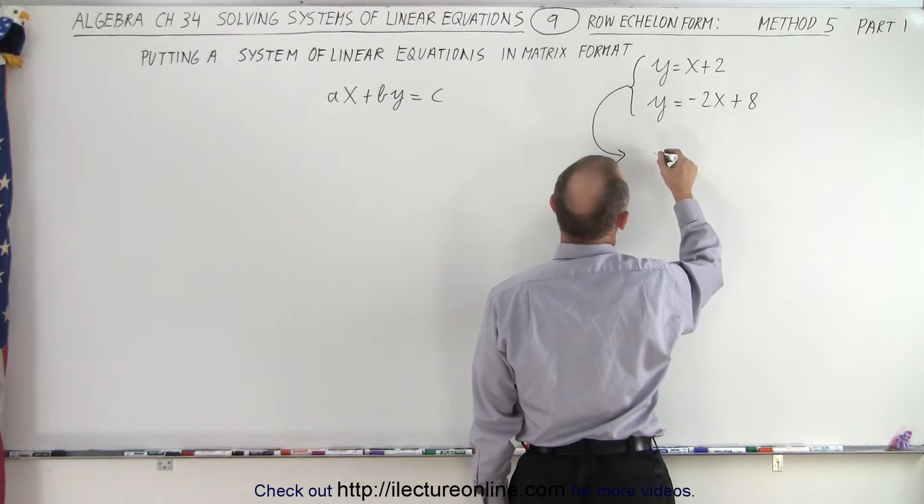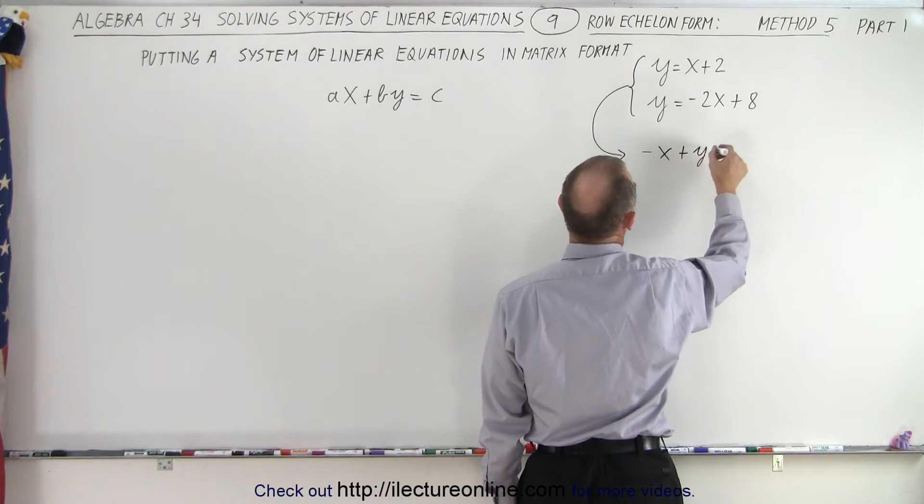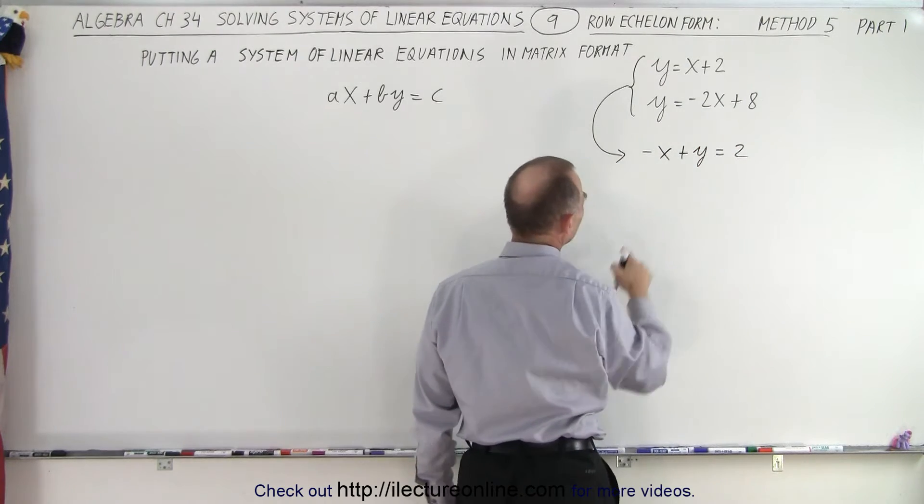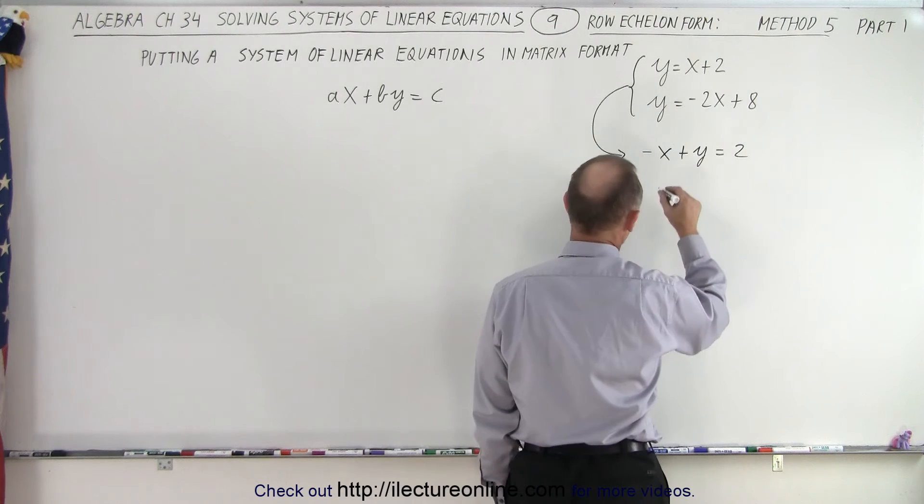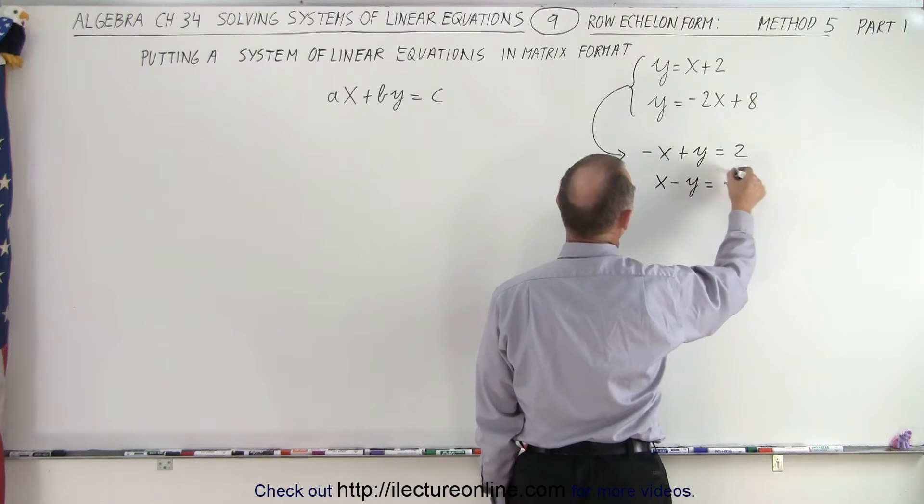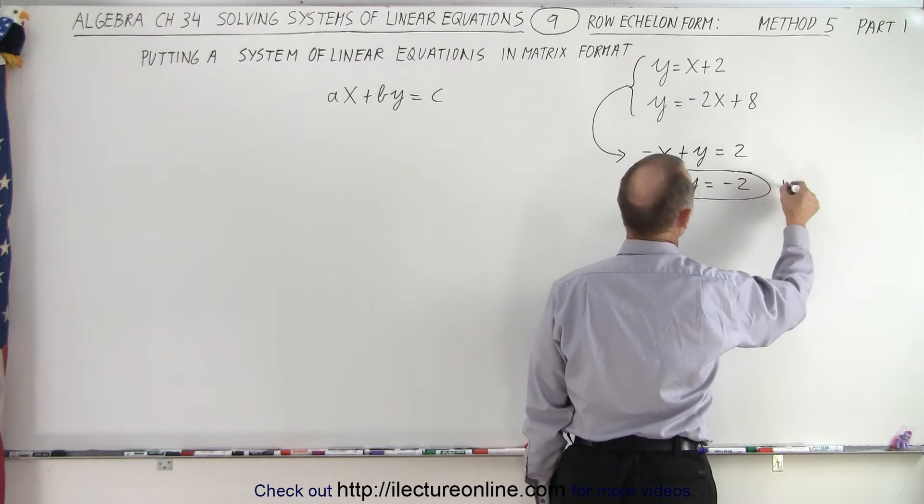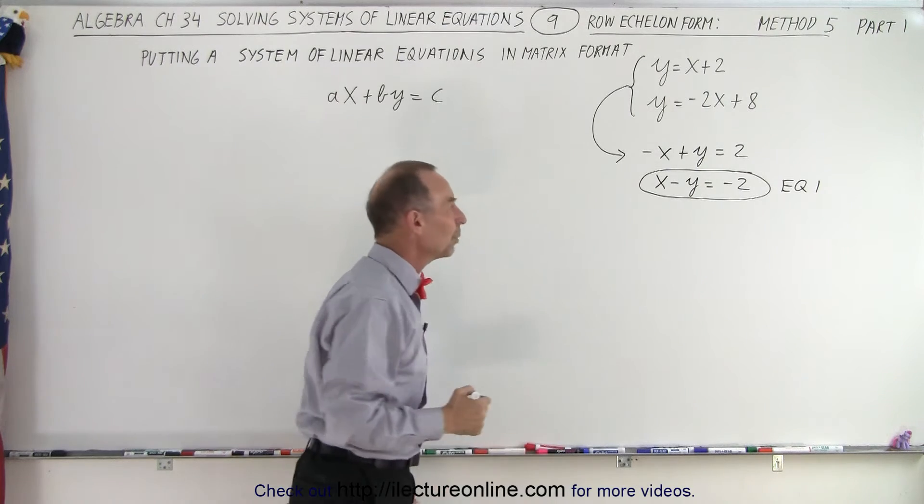I don't like the negative in front, so I'm going to write this with positive x. So this becomes x - y = -2. There's the first equation written in that form, ax + by = c.